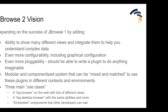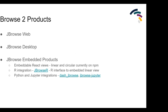We can also produce embedded components that other developers can use, which is really cool. The primary audience for this talk is more users than developers, but feel free to ask technical questions later. There are three main categories of products JBrowse2 is producing: JBrowse web, JBrowse desktop - which is what we'll be using today during the tutorial - and the JBrowse embedded products, which allow you to take different JBrowse views and use them in your own apps.